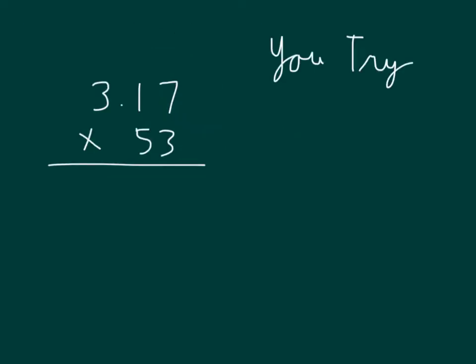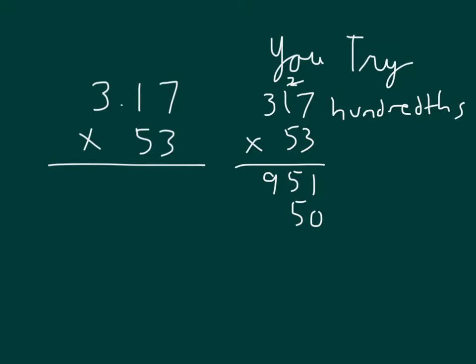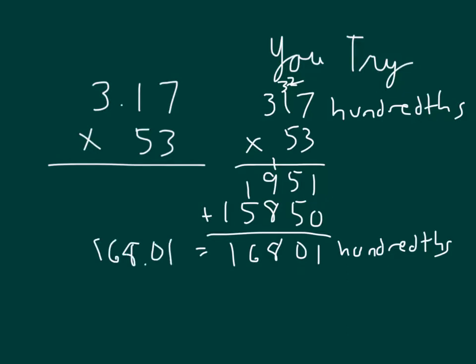Here's a problem for you to try. Go ahead and work it out. Make sure to place your decimal point correctly. Going through that process with that standard algorithm. 5 times 1 is 5 plus 3 is 8, 5 times 3 is 15. And then we can add those two together. That'd be 16,800 one-hundredths, which would be equal to 168.01. So 3.17, or 3 and 17 hundredths, times 53 would be 168 and one-hundredth.